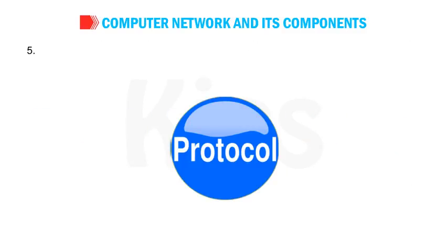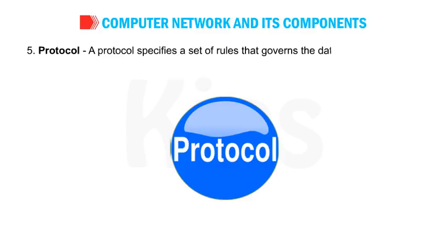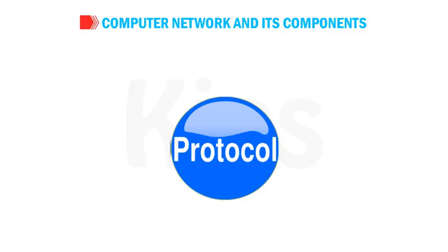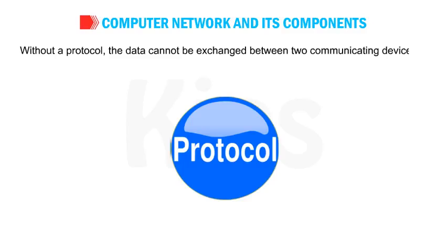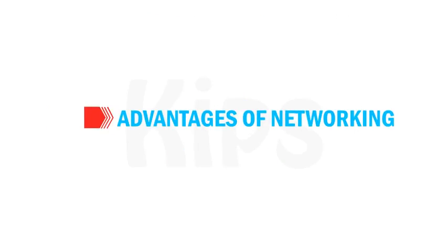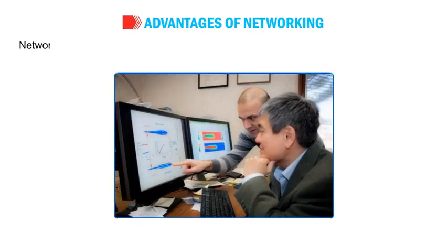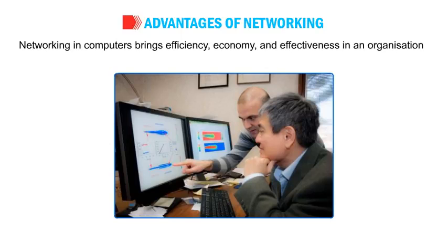Number 5: Protocol — a protocol specifies a set of rules that governs data communication. Without a protocol, data cannot be exchanged between two communicating devices. Now let us talk about the advantages of networking. Networking in computers brings efficiency, economy and effectiveness in an organization.